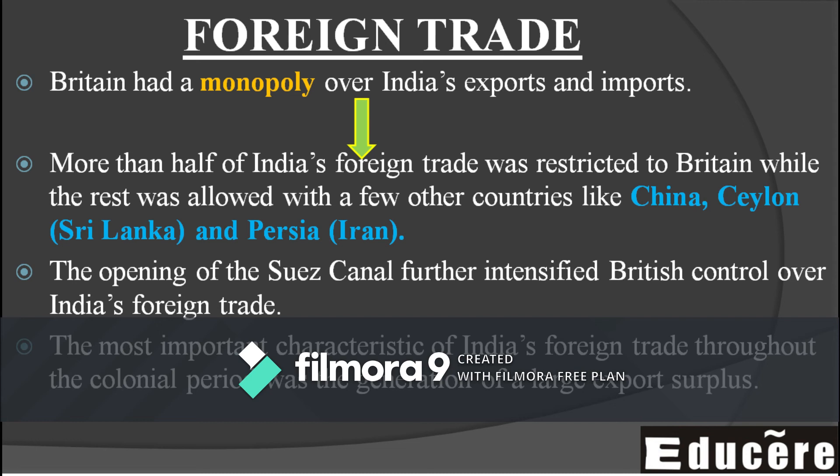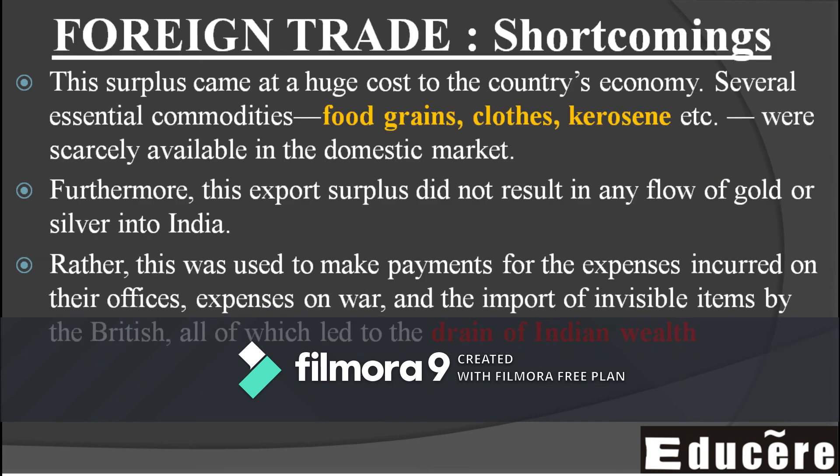The most important characteristic of India's foreign trade was a large export surplus. At that time, India was basically an exporter nation — exports were much higher than imports. This was the scenario of India under British rule. However, the Britishers slowly degraded our industries, and India eventually moved from exporter to importer category, though there was a nominal export surplus.